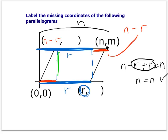Let's finish by finding the vertical distance. We know this vertical distance is m, so this vertical distance is also m, and we can fill in that missing y-value of m. As a double check: these y-values are the same; if this y-value is zero then this y-value is also zero, and we can fill that in. Then n minus r plus r equals n, showing that is correct. We've now filled in all the missing coordinates.